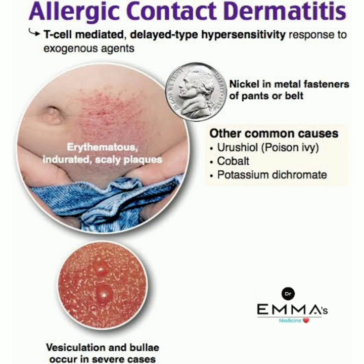An important example is nickel in metal — such as fasteners of pants or belts — which causes allergic contact dermatitis. Other common causes include urushiol, cobalt, and potassium dichromate.